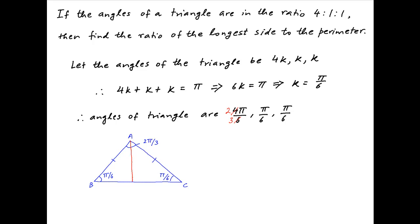If we drop a perpendicular from vertex A onto side BC, let's label it AD. This perpendicular will bisect angle A, and AD will also bisect the side BC. Let's assume that the length of side AB is equal to x, therefore the length of side AC is also equal to x. In triangle ABD, which is a right-angled triangle, the length of side BD is equal to x times cos(π/6), which is equal to x times √3/2.